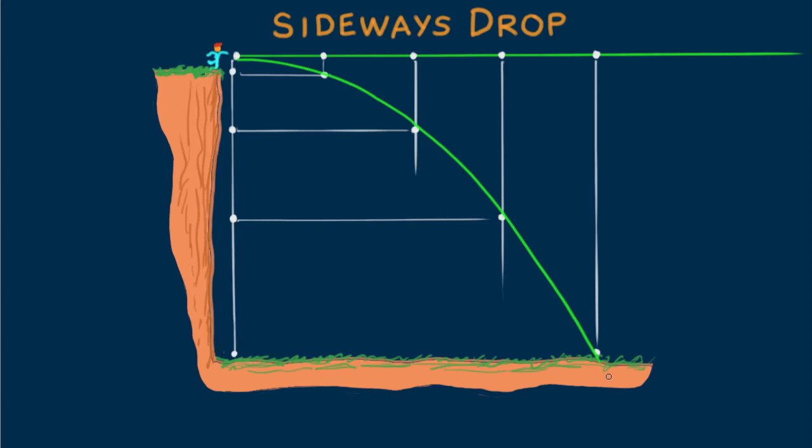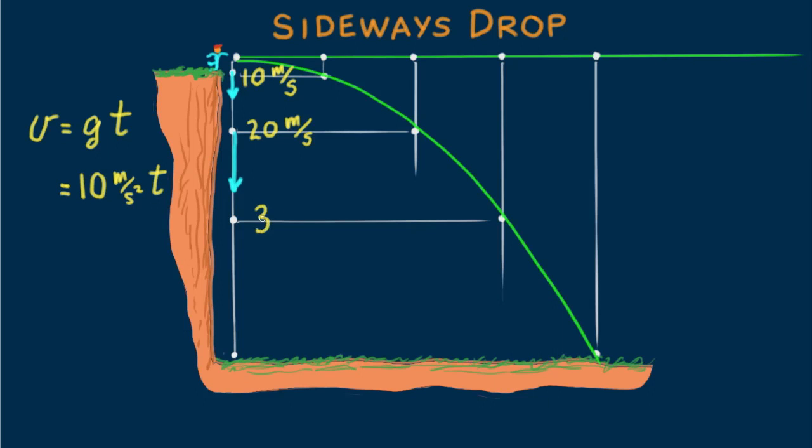Let's look at some velocities. First, vertically. An object dropped from rest gains a velocity, V equals GT. G is the acceleration of fall, ten meters per second squared. So in one second, its velocity is ten meters per second. At two seconds, twenty meters per second. At three seconds, thirty meters per second. At four seconds, it hits the ground with a velocity of forty meters per second. Oops, not enough space to show the full forty meter per second vector, but I think you get the idea.